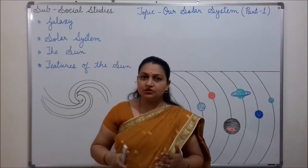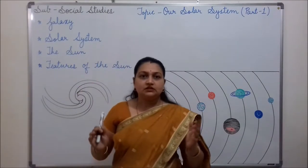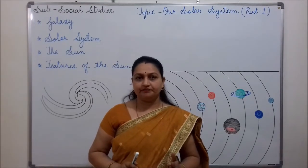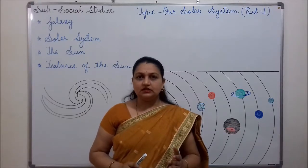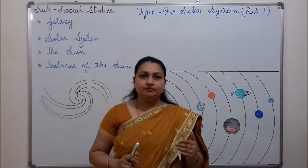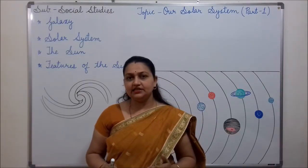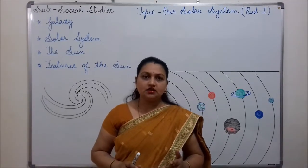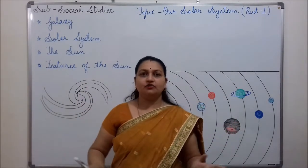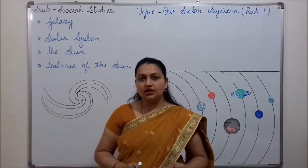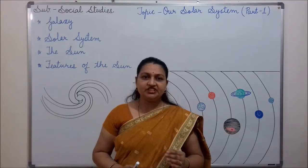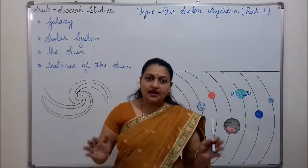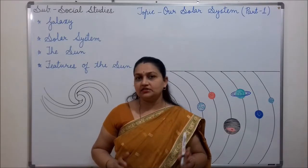Now come to the solar system. The sun and its family form the solar system. The family of the sun consists of planets, their satellites and pieces of rocks and dust. The sun is a huge ball of hot gases. It is the only member in the solar system which has its own heat and light. There are eight planets in the solar system.